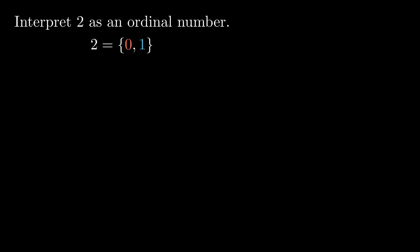Interpret 2 as something called an ordinal number. I'm following John von Neumann's ideas here, where 2 is a set that has two things in it, but more importantly, it has a first thing called 0 and a second thing called 1.